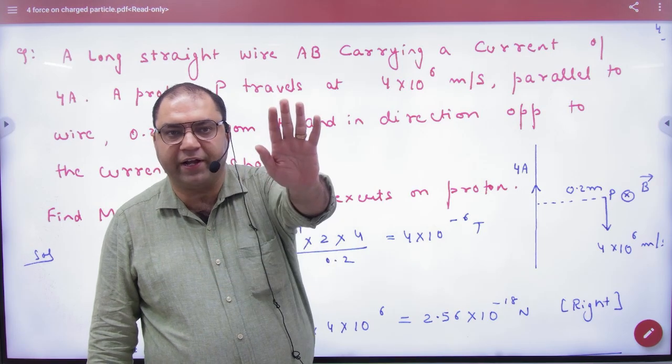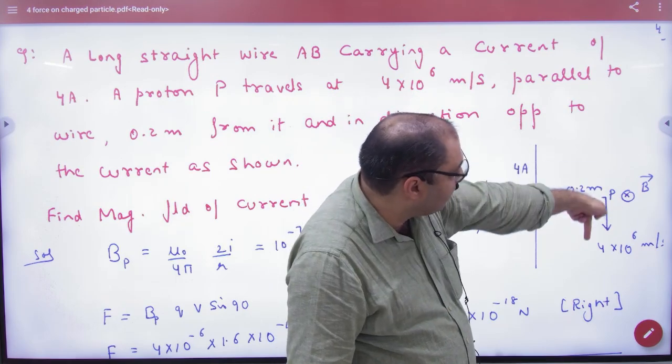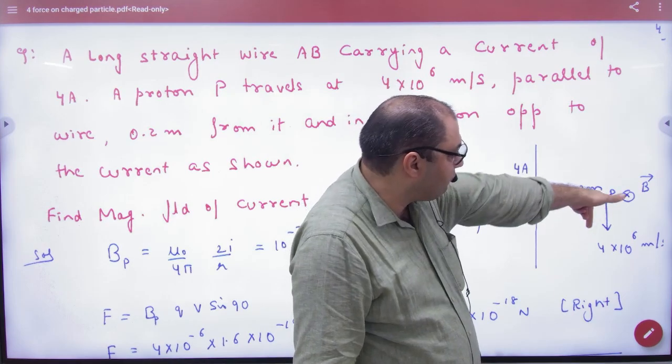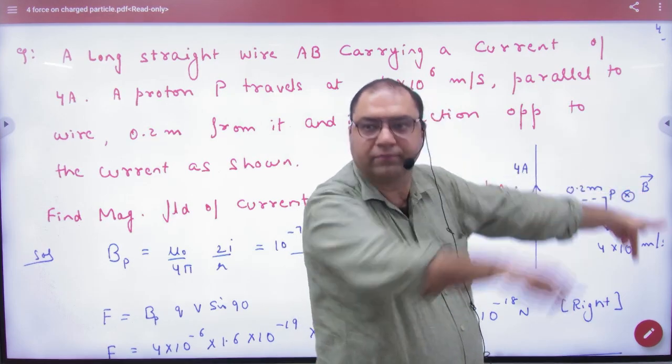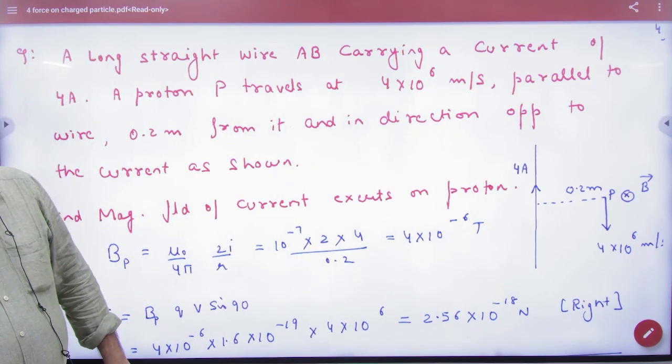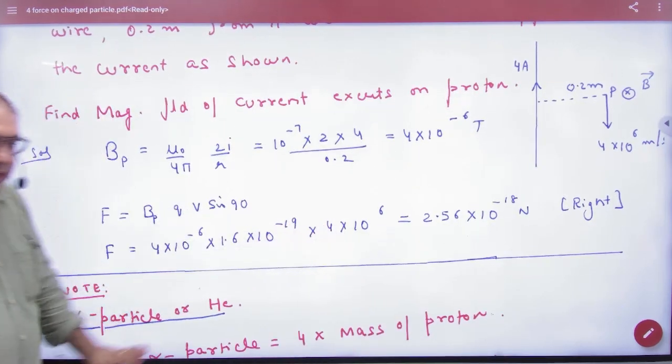What will be the direction of force? Use Fleming's left-hand rule. B is into the board, the direction of positive charge is below, so the force will be to the right. So the value comes and direction also comes.